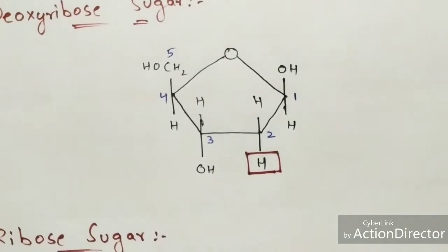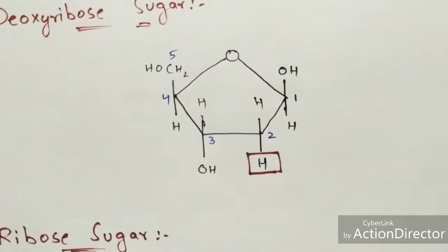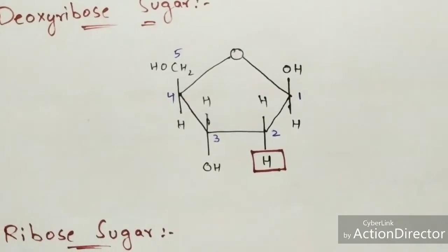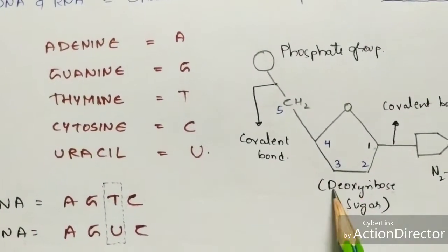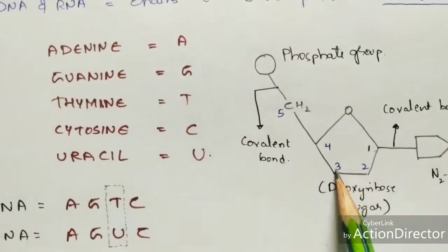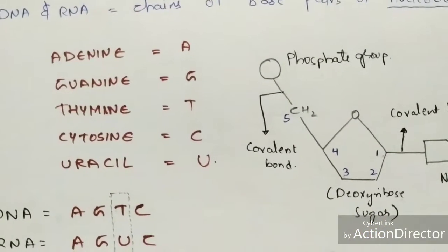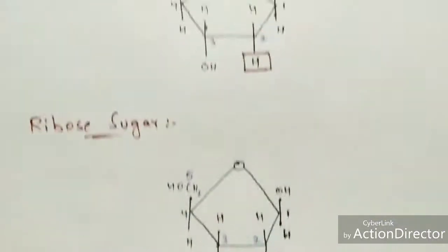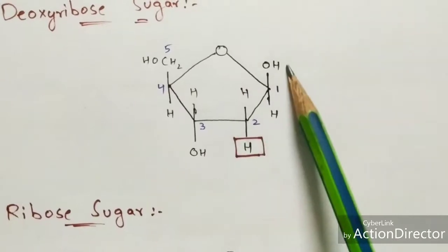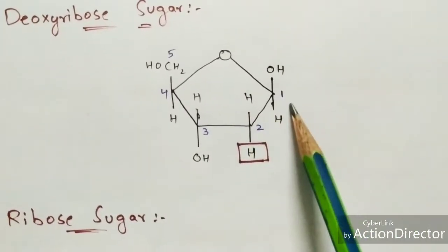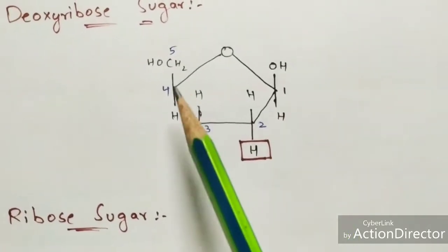Coming to deoxyribose sugar and ribose sugar structures: if the nucleotide contains deoxyribose sugar it is DNA, and if it contains ribose sugar it is RNA. The sugar structure consists of only five carbons — first, second, third, fourth, and fifth carbon, with CH2OH at the fifth carbon position.